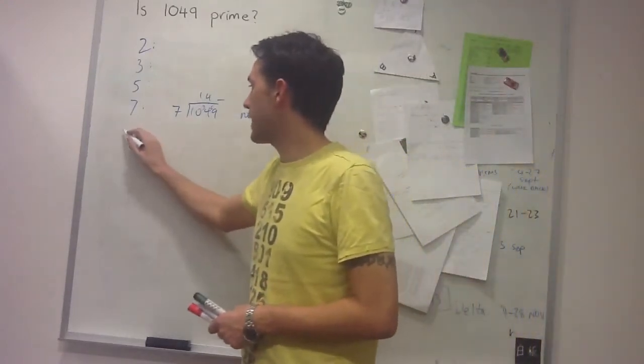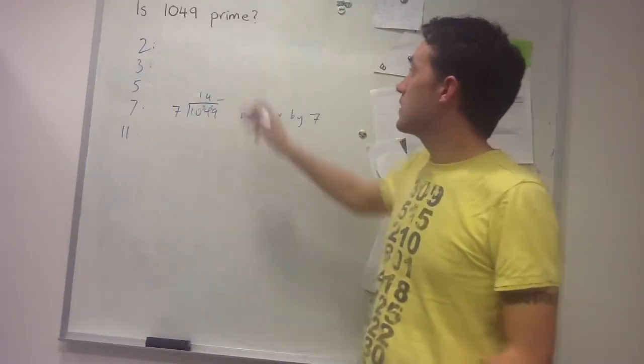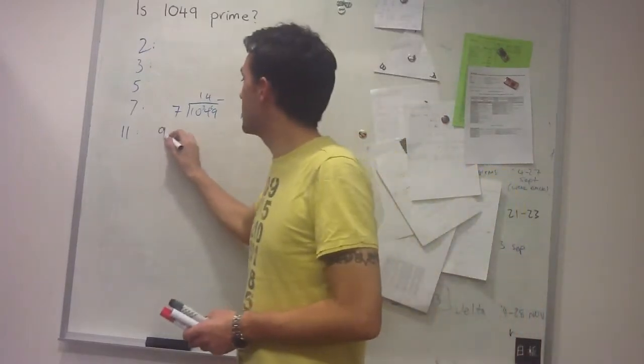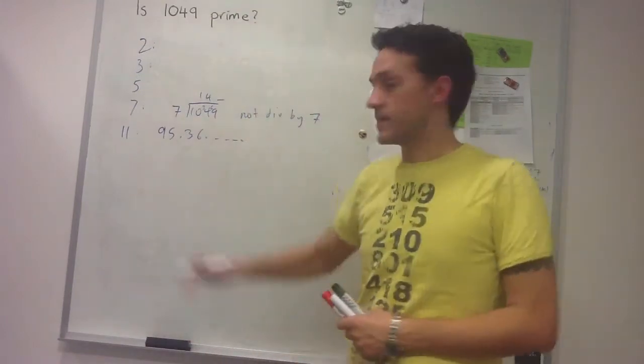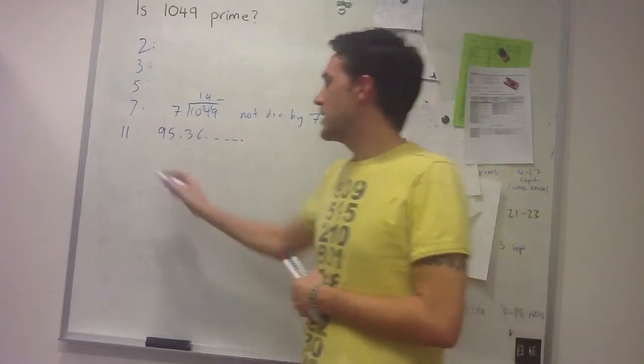So if I check, say 11 next, and when I divide 1049 by 11, I get 95.36 something something. And so this is not a whole number, so it's not divisible by 11. I proceed through.